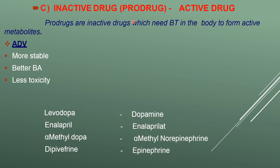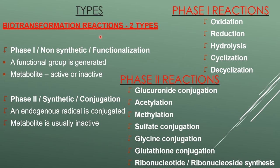An inactive drug can also be called a prodrug, which is converted into an active drug in the body. A prodrug needs the body environment to form an active metabolite, resulting in better stability, better bioactivity, and less toxicity. For example, levodopa is converted into dopamine in the body.